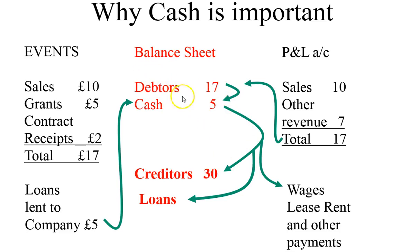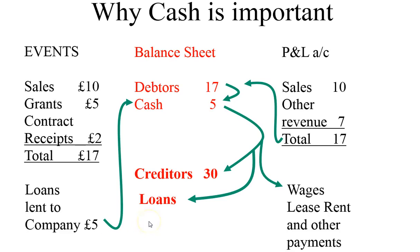Sometimes companies will have more debtors than creditors — a little bit of a safety zone if your debtors start to repay rather too slowly. That goes on to ratios and analyzing the balance sheet. But in terms of cash flow, it is this process — the balancing act — that every financial manager has to carry out on a daily basis.